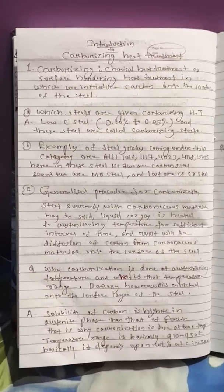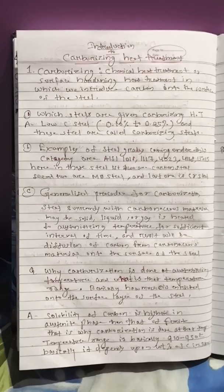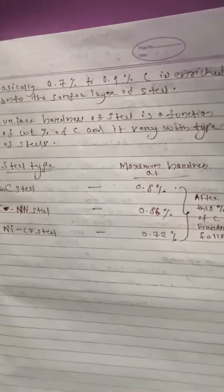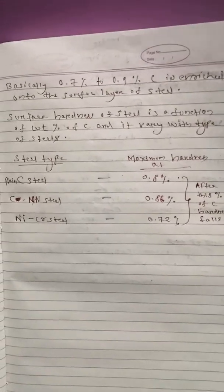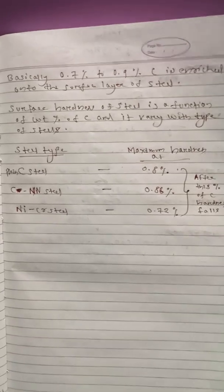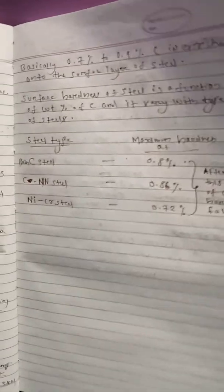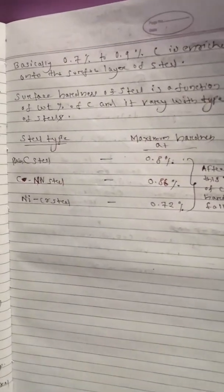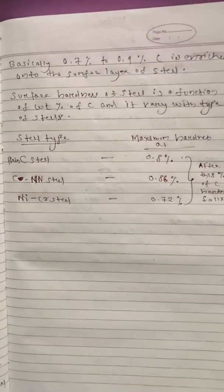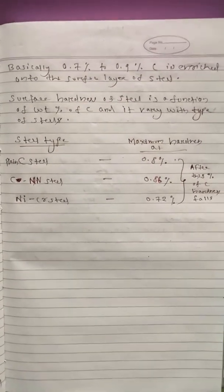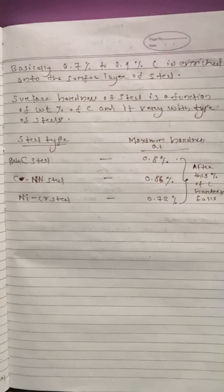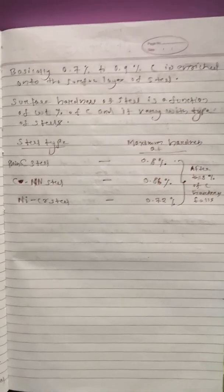Basically how much carbon is enriched on the surface of the steel. Basically it is 0.7 percentage to 0.9 percentage of carbon is getting enriched onto the surface of the steel. This weight percentage of carbon which is getting enriched onto the surface layer of the steel basically depends on the time, the exposure time or the holding time.